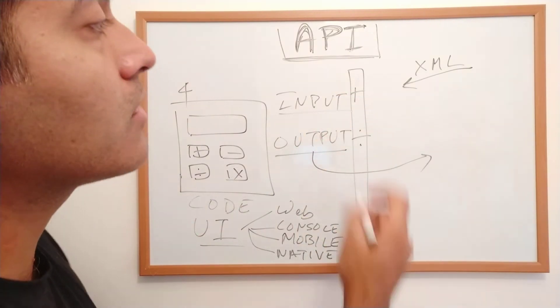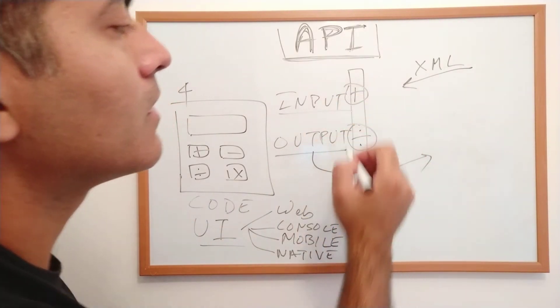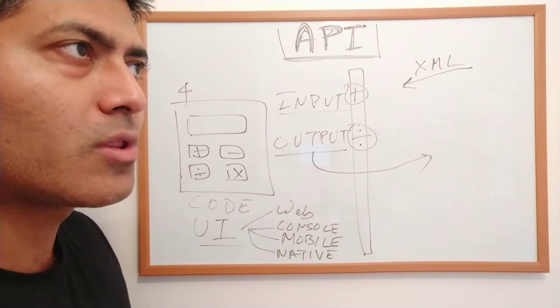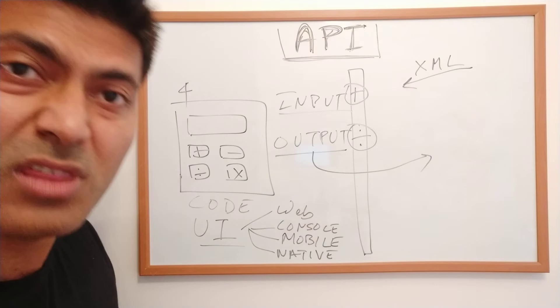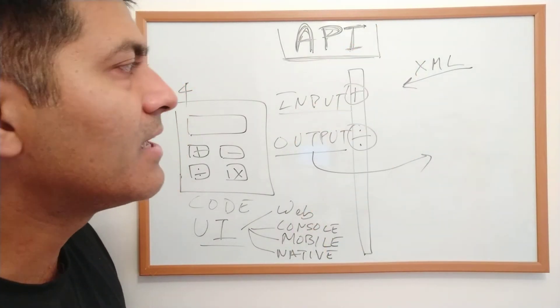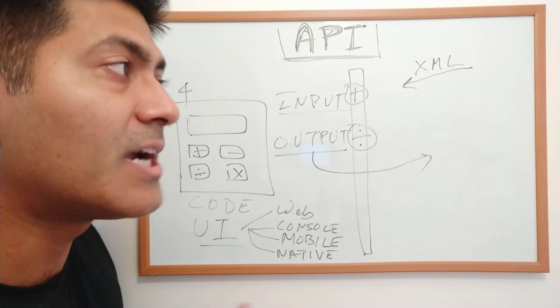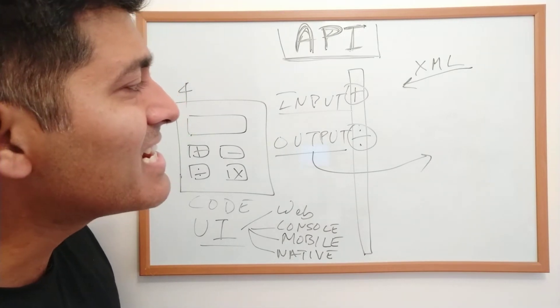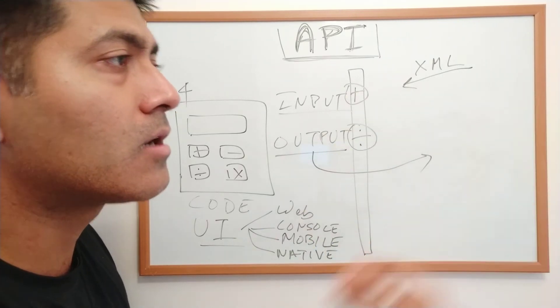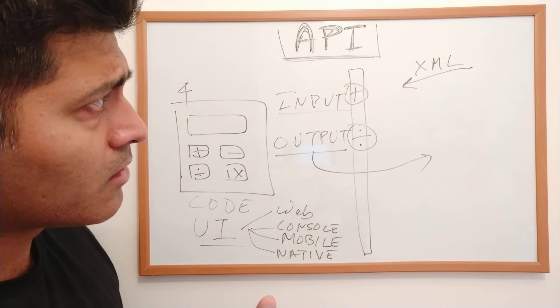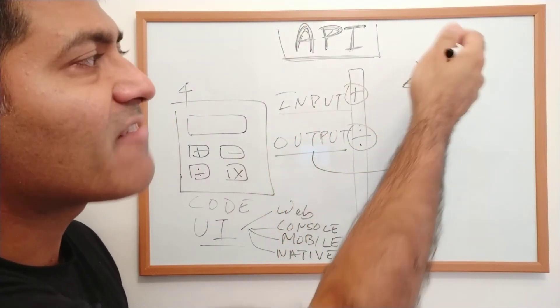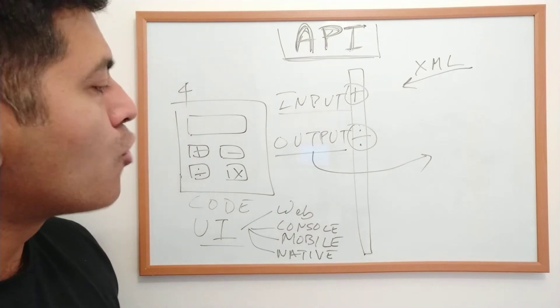It's only exposing certain functionality, not all of it. The good thing about APIs is that you can expose some functionality selectively. It's also safe because you're only exposing the elements you want to expose. Another benefit is that external third-party services can use the logic and have their own interface, their own UI.